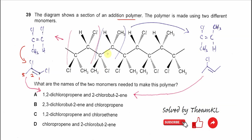For the second monomer, we just need to add a double bond here — a C=C double bond on this part — and we get this monomer. If you convert it to the skeletal formula, it's easier for naming. So this one has a 1st carbon, 2nd carbon, 3rd carbon, and 4th carbon. On the 2nd carbon there is a chlorine, and on the 2nd carbon there is a double bond. So this is 2-chlorobut-2-ene.